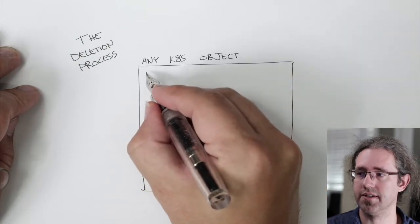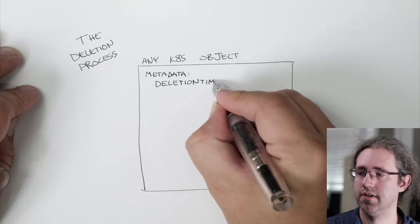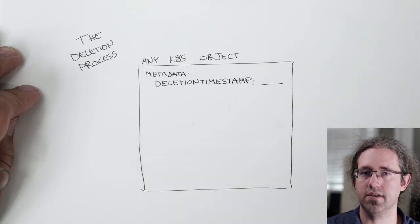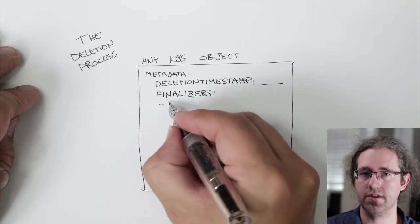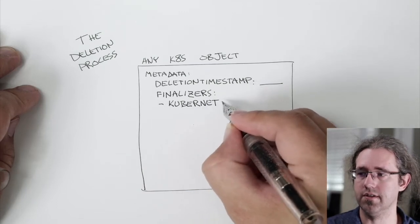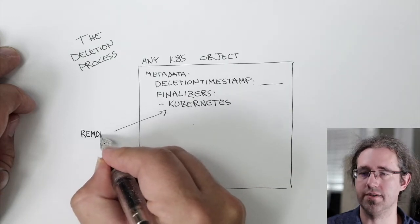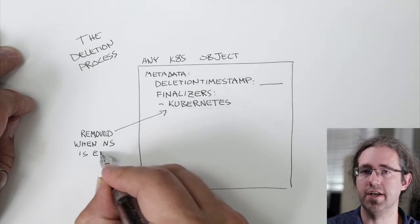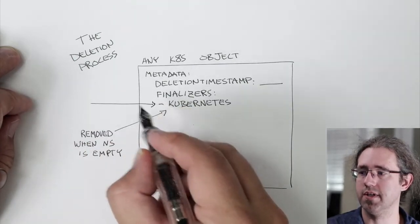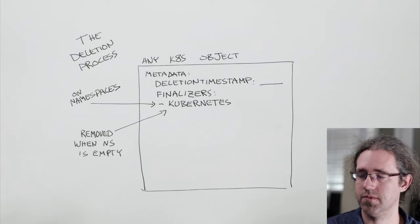There's more to it for some particular objects. But roughly speaking, all Kubernetes objects have metadata. And inside this metadata, there are two fields relevant to deletion. The first one is deletion timestamp — if that has a non-empty value, then the deletion process has started for that resource. And there's also a list of finalizers, and the deletion is not final until all of those finalizers have been removed. The finalizer we care about today is named 'kubernetes', and this is the finalizer that is removed when the namespace object is empty. Until that is removed, the namespace is not deleted from the system.